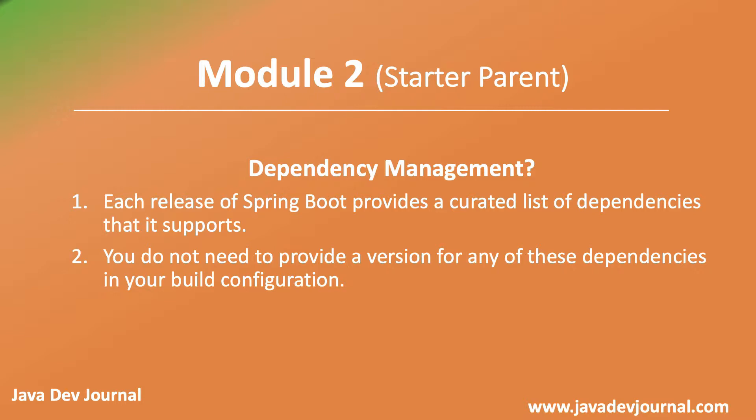You do not need to provide a version for any of these dependencies in your build configuration. In Maven, on your pom.xml, if you are using Spring Boot starters, you are not defining version numbers — they are automatically picked for you. For example, if you are creating a web application and you need the Spring Web dependency, you never define whether you need Spring 5.1 or 4.0 — based on the parent version, the correct version is automatically selected.